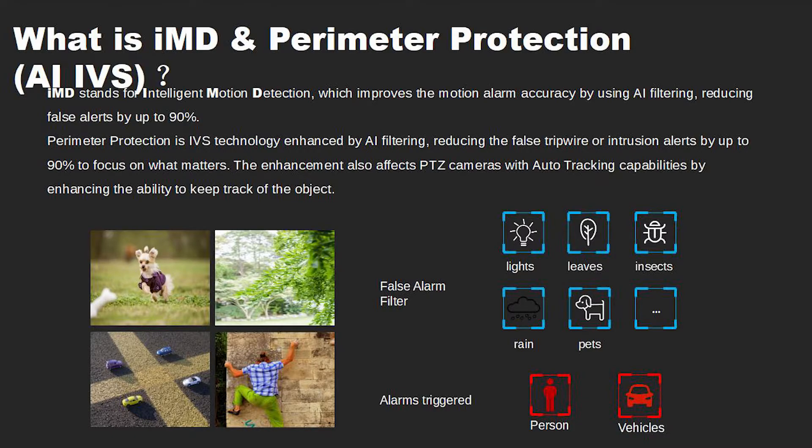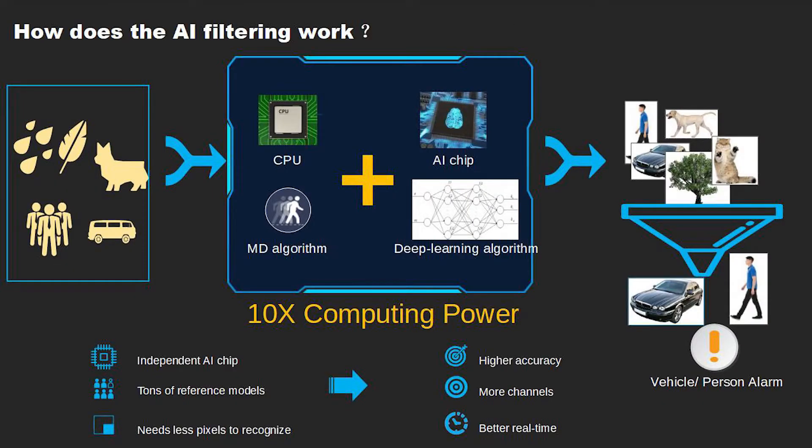The enhancement also affects PTZ cameras with auto-tracking capabilities by enhancing the ability to keep track of the object. We added an independent AI chip to handle the real-time data processing of the video.